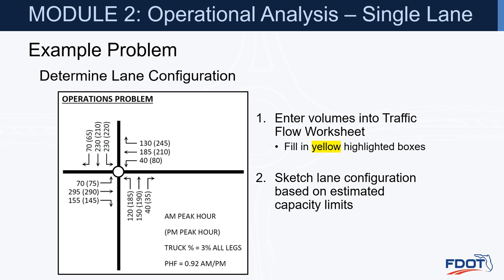Let's go through an example problem. The goal is to determine the lane configuration, walk through all steps, and then complete the operational analysis. After the operational analysis, we can move into CAD and begin design. The example shows AM and PM peak hour turning movements for each leg — lefts, throughs, and rights — along with truck percentages and the peak hour factor.